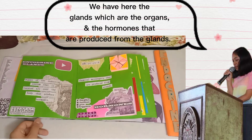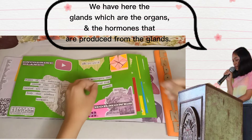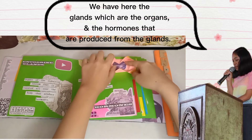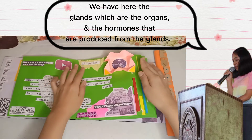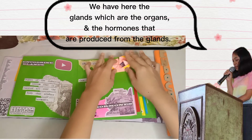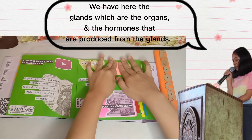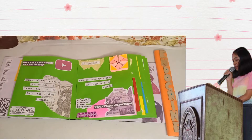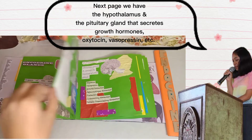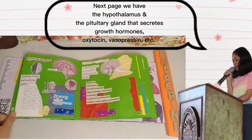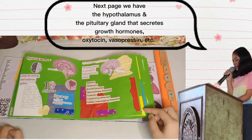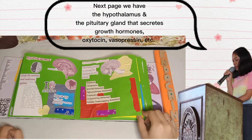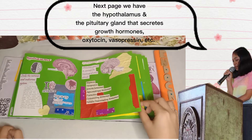We have here the glands, which are the organs, and the hormones that are produced from the glands. On the next page, we have the hypothalamus and the pituitary gland that secrete growth hormones, oxytocin, vasopressin, etc.